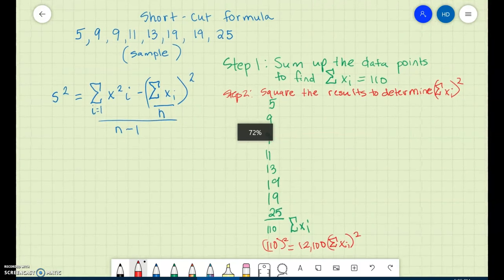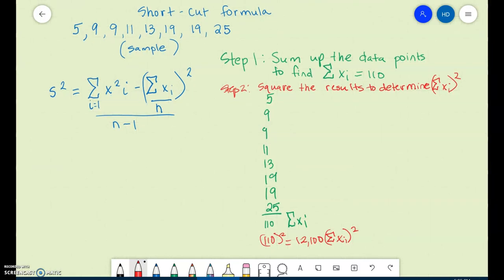So all I have done is I've taken the sum of the data points, added them up, and squared it. And now I know that (ΣXi)² is equal to 12,100.